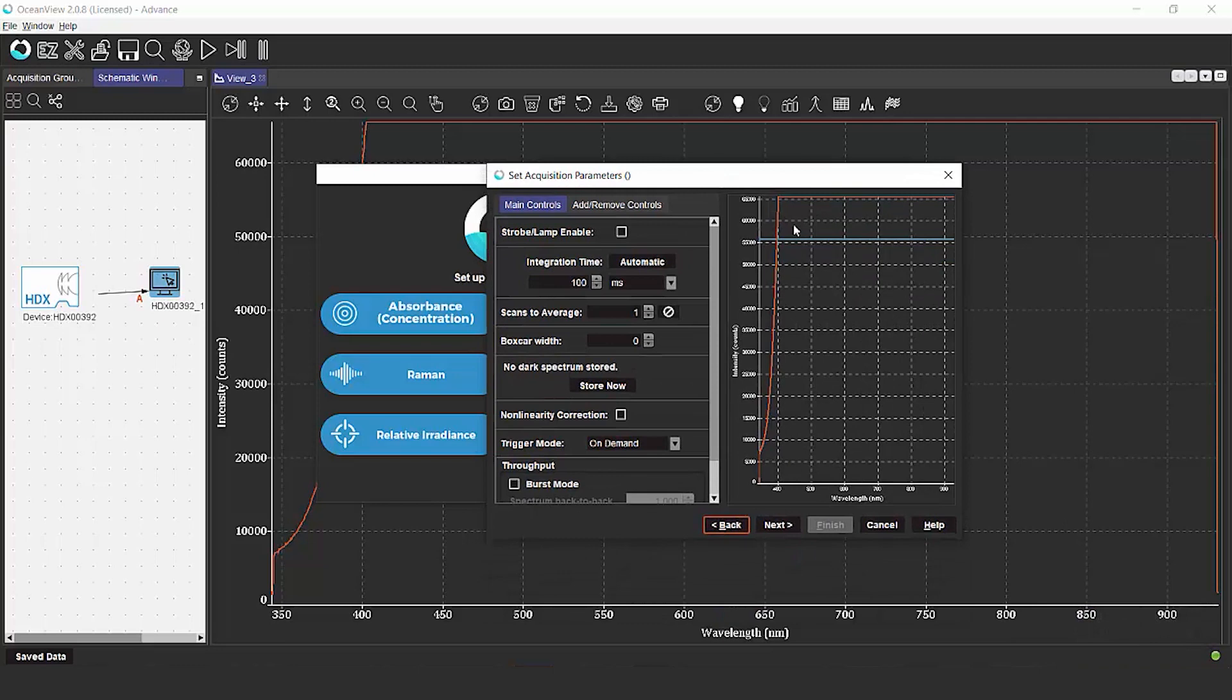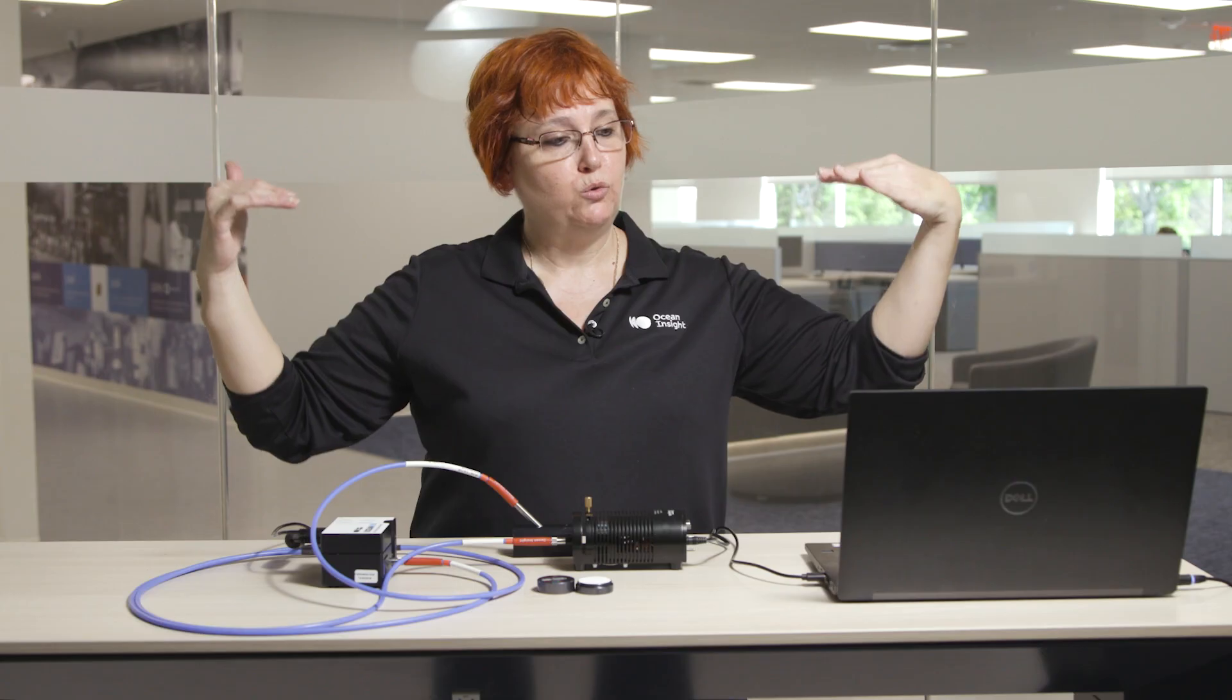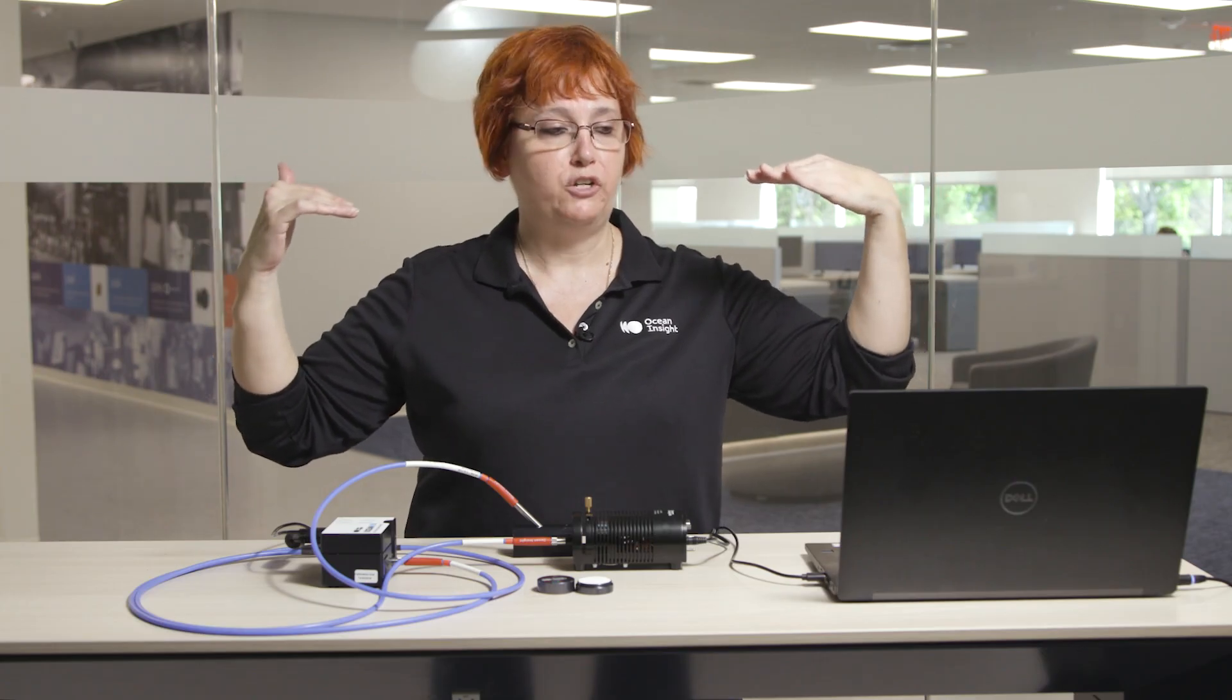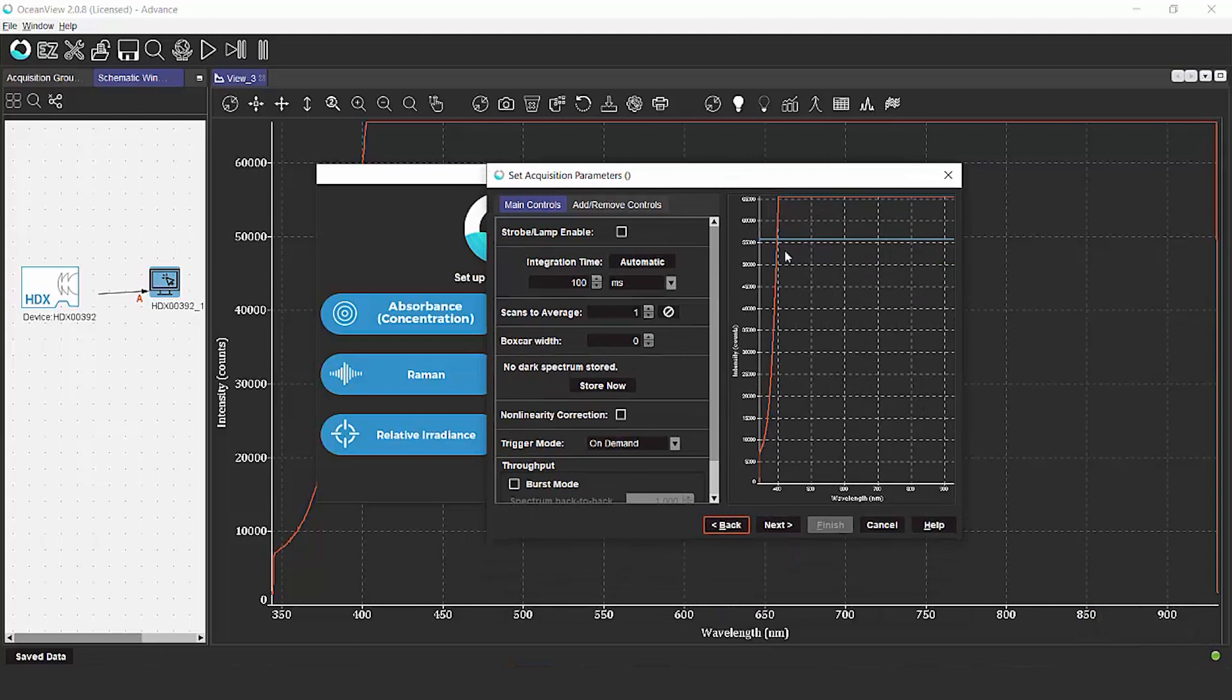How would you know that? We have a flat line that grows across the top of the spectral window, which is indicating that the spectrometer can't see any more light. It's completely saturated.